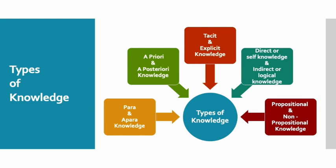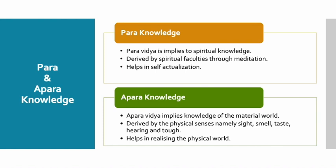Humne apne pichle kuch videos mein knowledge ke various aspects ke baare mein jaanne ki kooshish ki hai. Aaj hum knowledge ke various types ke baare mein discuss kareenge, joh is prakaar hain: para and apara knowledge, a priori and a posteriori knowledge, tacit and explicit knowledge, direct and indirect knowledge, and propositional and non-propositional knowledge.